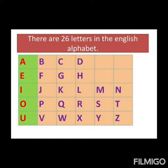Hello children, there are 26 letters in the English alphabet. A, B, C, D, E, F, G, H, I, J, K, L, M, N, O, P, Q, R, S, T, U, V, W, X, Y, Z.